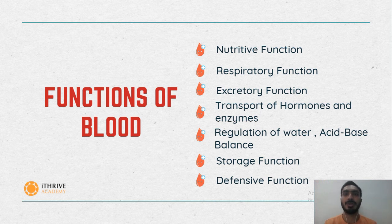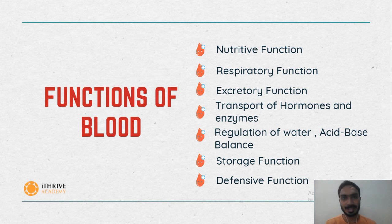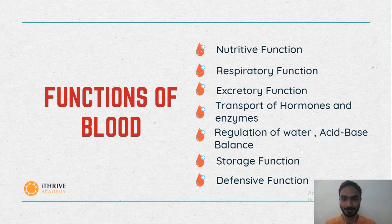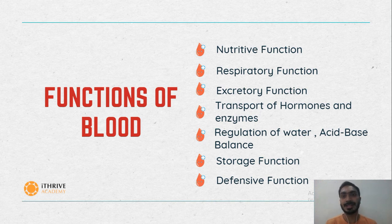Transport of hormones: in the human body we have various glands known as endocrine glands. Endocrine glands secrete specific chemicals into the blood called hormones. Hormones reach specific sites and execute their action, ultimately regulating the activity of various cells and tissues in the body. Regulation of water and acid-base balance: blood contains various proteins that act as a buffer and help in the regulation of acid-base balance.